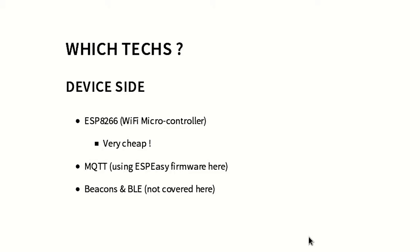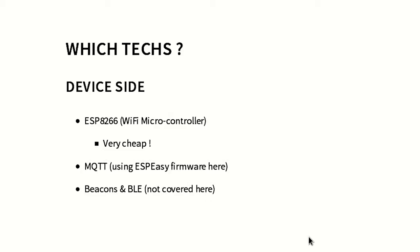What technologies are we going to use? On the device side, we will use the ESP8266, which is a very cheap microcontroller. You can add Wi-Fi to your device for like a dollar. We will also use MQTT, which is the PubSub broker I was speaking about before. We will also use Beacons on Bluetooth Low Energy, though I won't cover that part here.